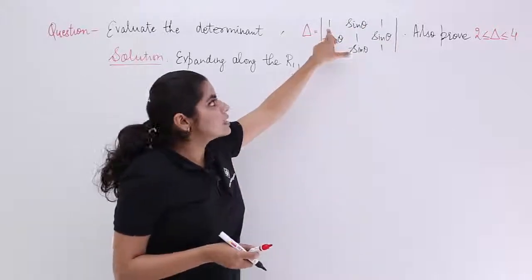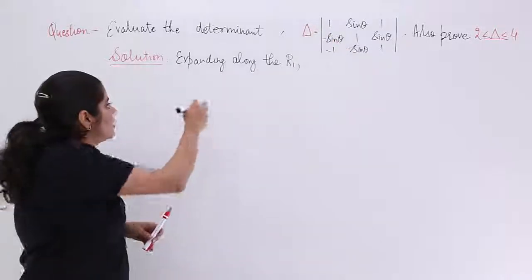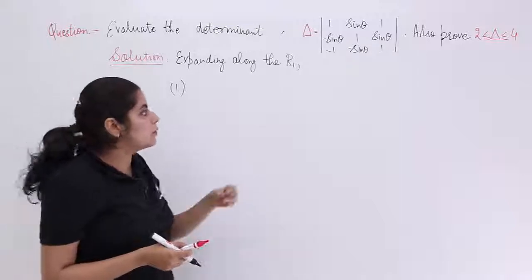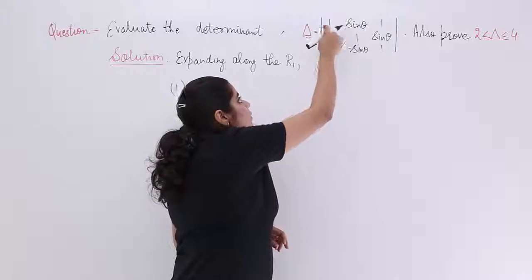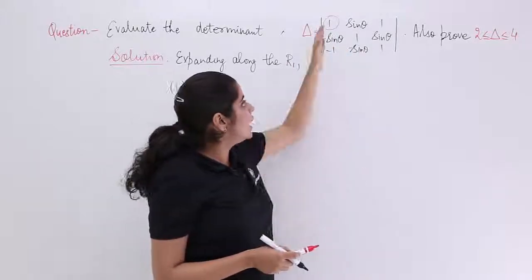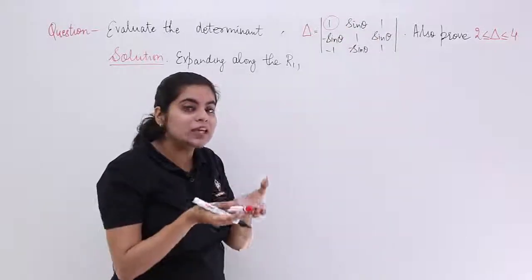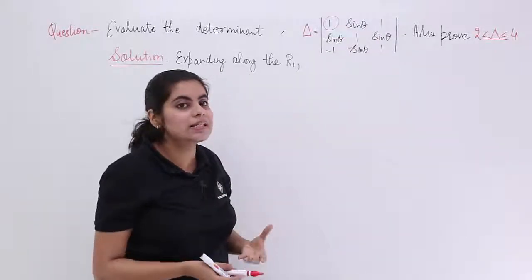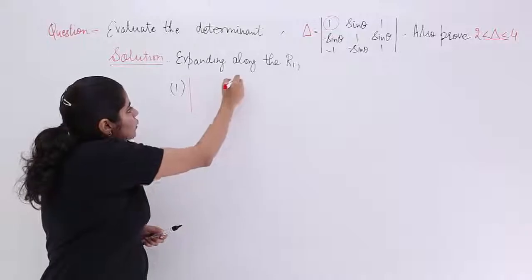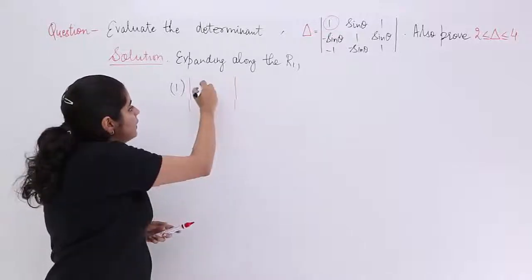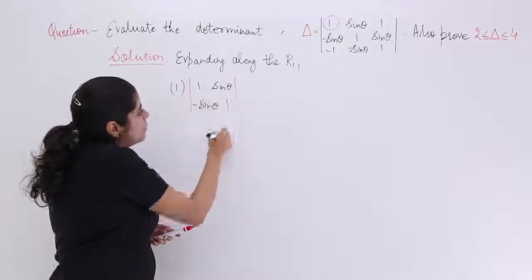Since 1 multiplied by anything does not change the result, we write 1 first. The rule says: whatever element you take, eliminate the column and row associated with that element, then write the sub-determinant that is left. What is left is: 1, sin theta / −sin theta, 1.